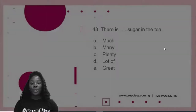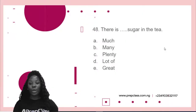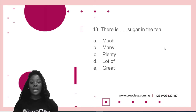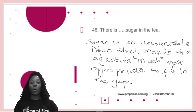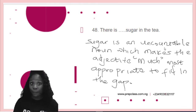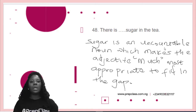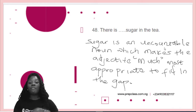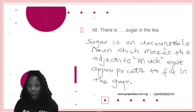The 48th question: there is that sugar in the tea. A: much. B: many. C: plenty. D: light up. And E: great. Which is it? Now, when it comes to classifying quantities and the correct form of adjectives to classify quantities, it can be a little confusing — especially in the use of many and much. People tend to interchange them in different sentences incorrectly, and that is wrong.